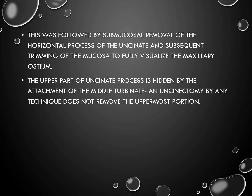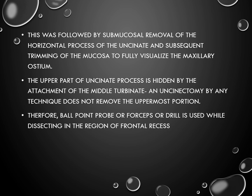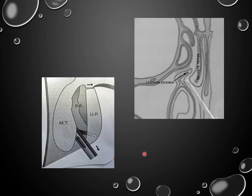The upper part of the uncinate process is hidden by the attachment of the middle turbinate, and uncinectomy by any technique does not remove the uppermost part. Therefore, a ball probe, forceps, or a drill is used while dissecting in the region of the frontal recess. This is the picture showing a back-biting forceps taking a bite between the vertical and horizontal portion of the uncinate process, with another incision given near the axilla of the middle turbinate forming a swing door. This is another picture showing the uncinate process and its relationship with the infundibulum.